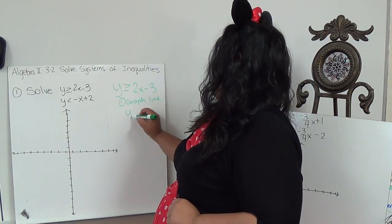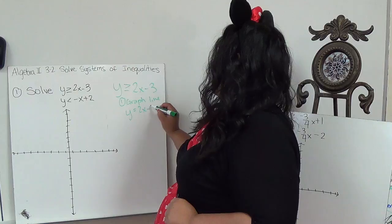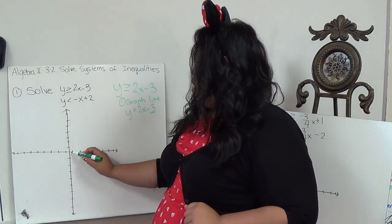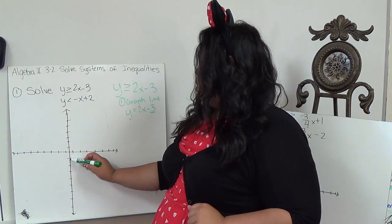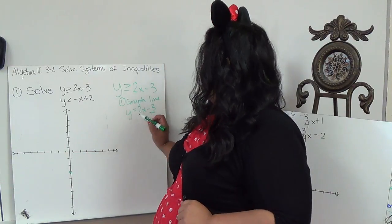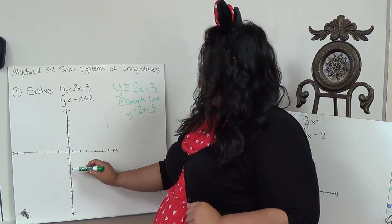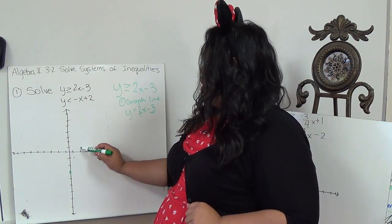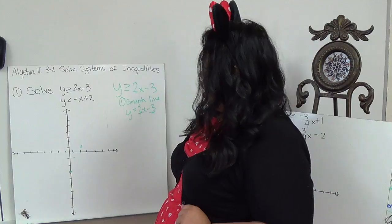By doing y equals 2x minus 3. So this is my starting point, negative 3. I mean, my y intercept is negative 3. And I'm going to go up 2 over 1. So 1, 2 over 1. 1, 2 over 1. It's kind of a steep line.